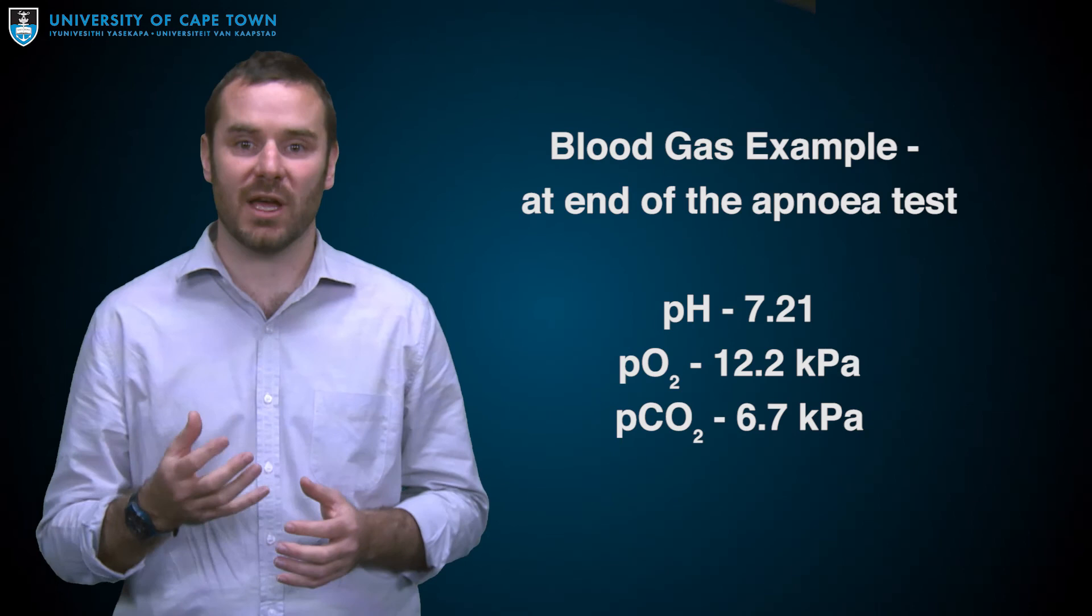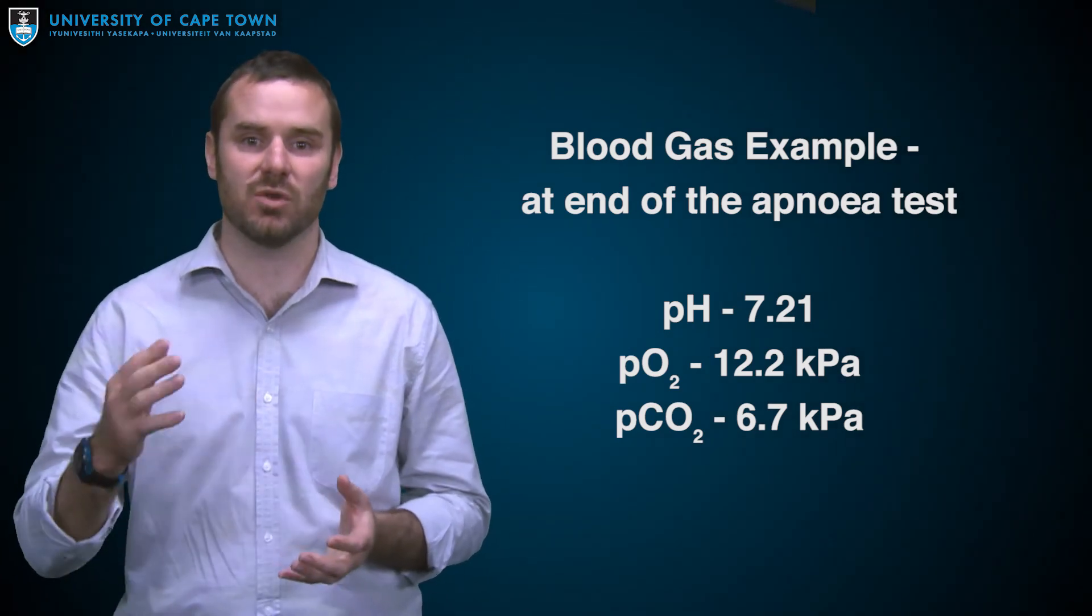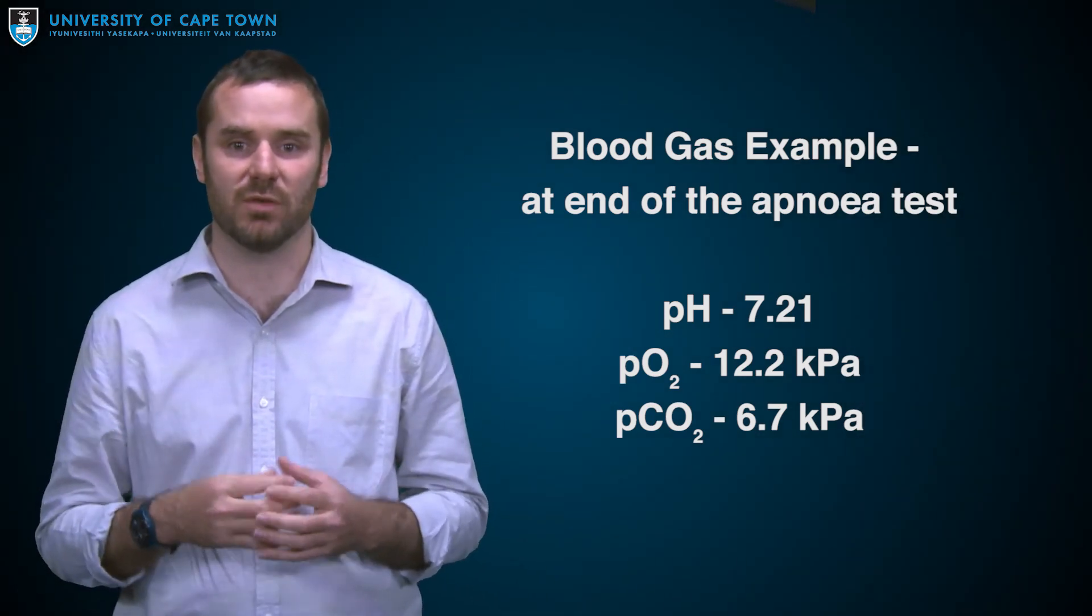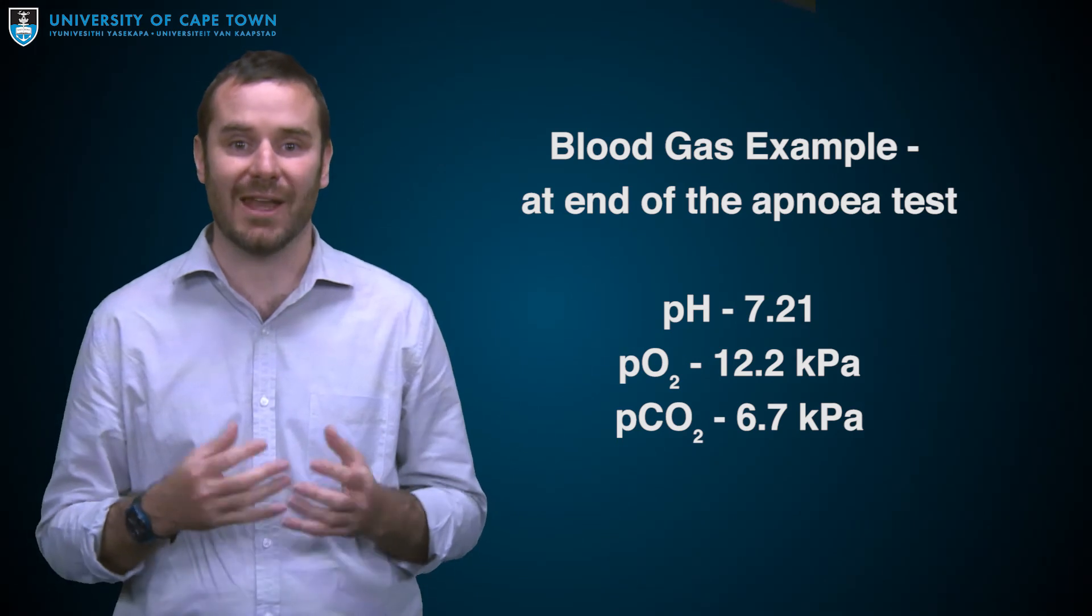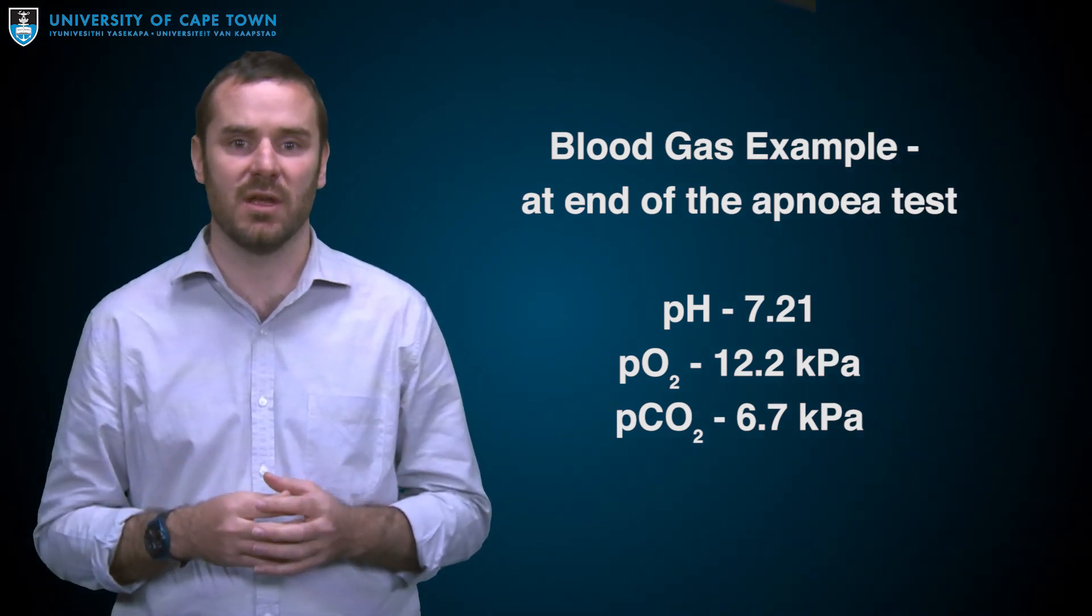Typically, after a period of 10 minutes, another blood gas is drawn. It can be taken earlier if the patient becomes unstable, which would require reinstituting ventilatory support. If the carbon dioxide level in the blood has risen to above 6.6 kilopascals or 50 millimeters of mercury, and no respirations have been seen, the patient can be declared brain dead. The time of the final blood gas is legally the time of death. It is the time when all brainstem tests were completed.